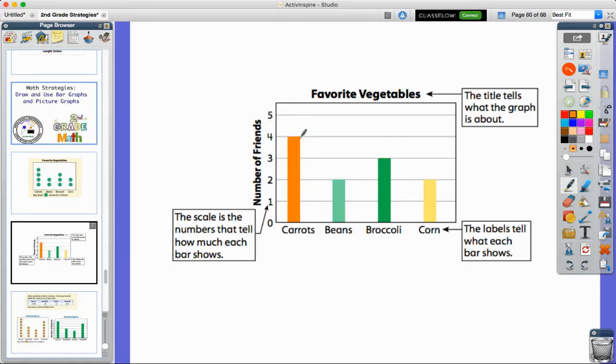So the same thing. I know that there are four friends who chose carrots as their favorite vegetable. I know that there are two that chose corn, three that chose broccoli, and two that chose beans. So you look at the way the bars are, how tall they are, and you use those lines to look over here and see the number of friends. Broccoli had three friends who chose that as their favorite vegetable.